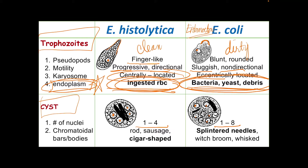The chromatoidal bars or bodies of E. histolytica cysts are rod-shaped, sausage-shaped, or cigar-shaped. For E. coli, they are splintered needles — whisk broom or witch broom-shaped. The most reliable way to distinguish E. histolytica from E. coli in terms of cysts are their chromatoidal bars or bodies: E. histolytica is rod/cigar-shaped, whereas E. coli is splintered like a witch broom.